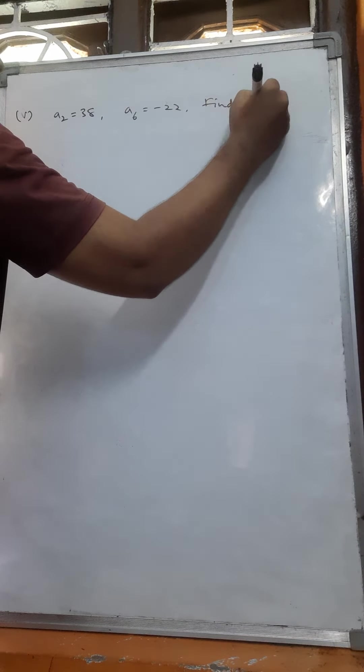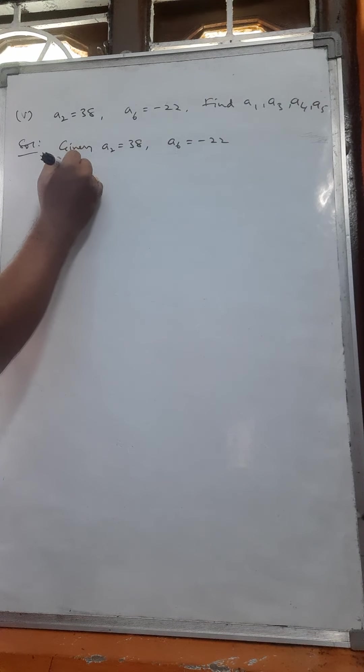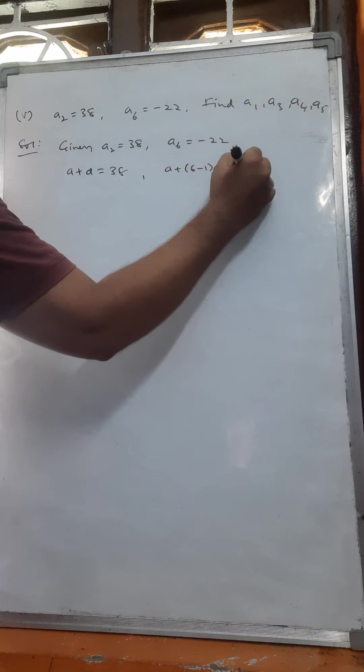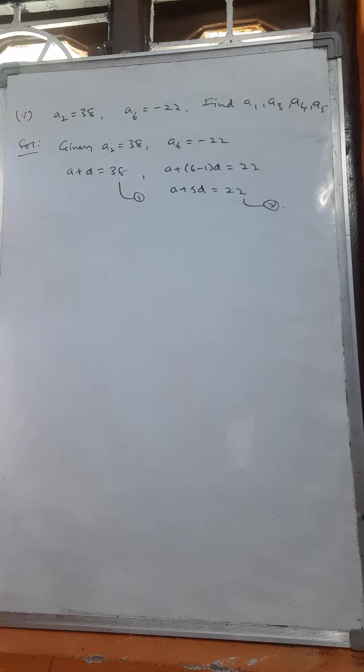Fifth problem: a2 is equal to 38, a6 is equal to minus 22. Find a1, a3, a4, a5. a2 means a plus d is equal to 38 — equation number 1. a6 means a plus 6 minus 1 into d is equal to minus 22, so a plus 5d is equal to minus 22 — equation number 2. Now solve these two equations using the elimination method.